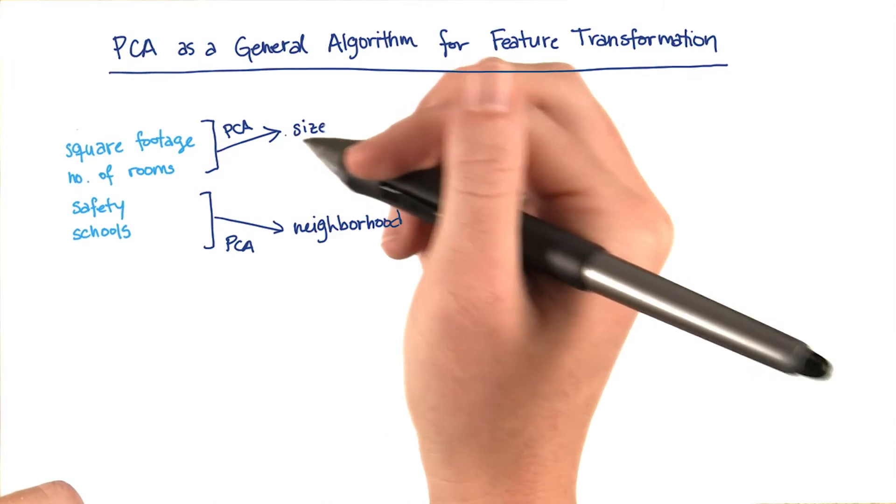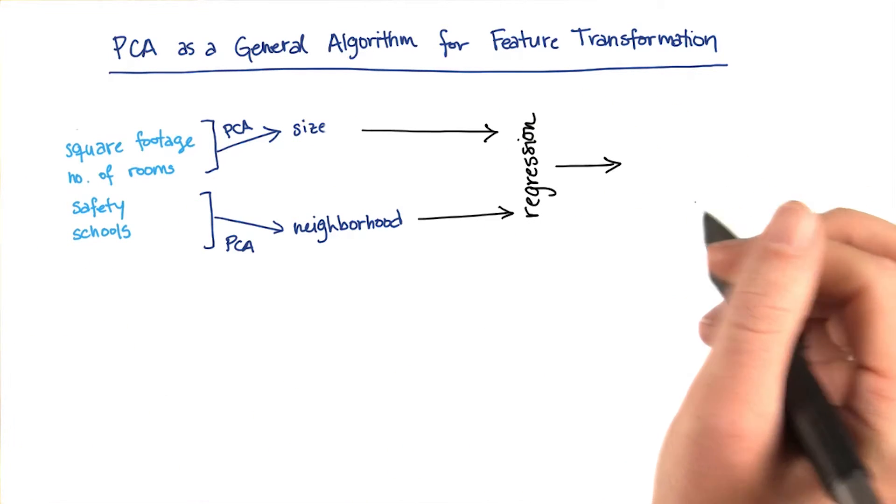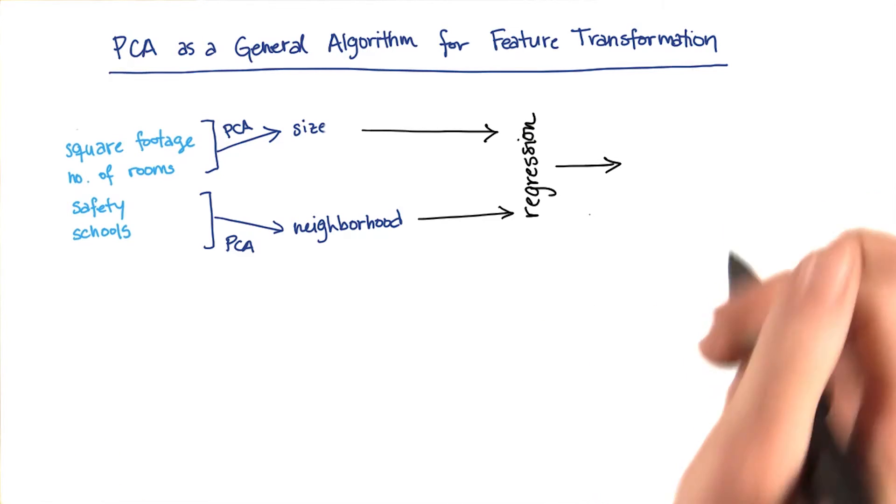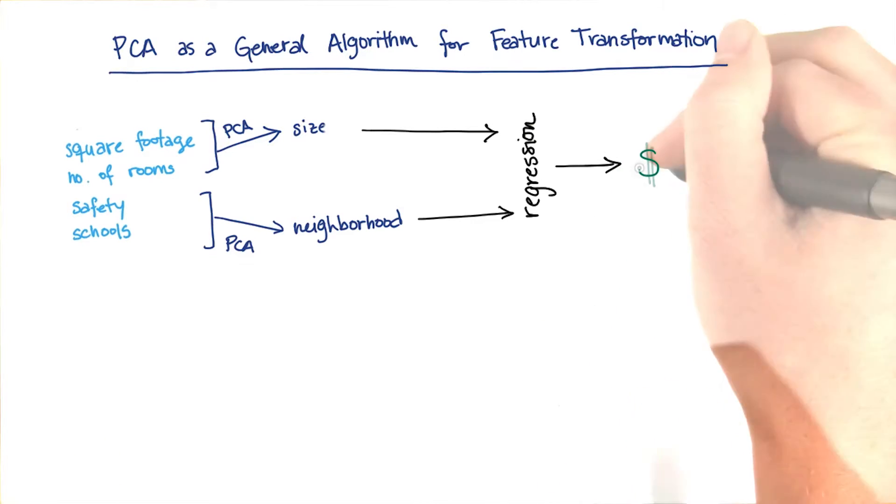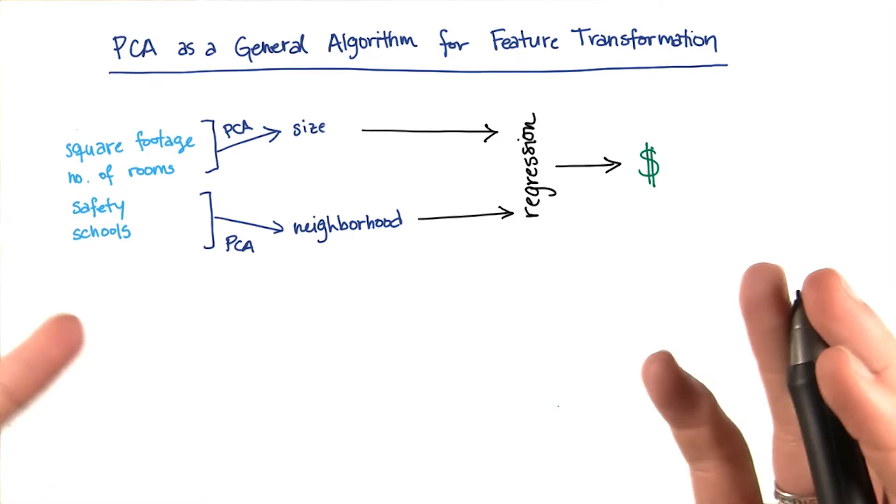Then we applied PCA to each of those independently and we came up with that single feature. We can put those features into a regression and come up with a house price. These would also be good inputs for a classifier if you're trying to answer some slightly different question.